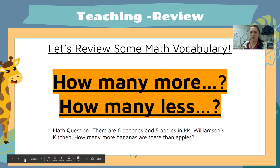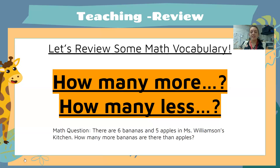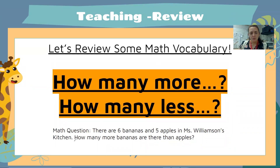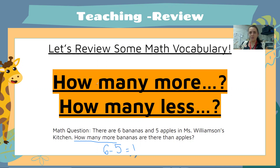Let's try a quick, easy example. There are six bananas and five apples in Ms. Williamson's kitchen. How many more bananas are there than apples? I see those keywords — 'how many more' — so I automatically think subtraction. I'm going to subtract 5 from 6 to get 1 to solve this math problem.